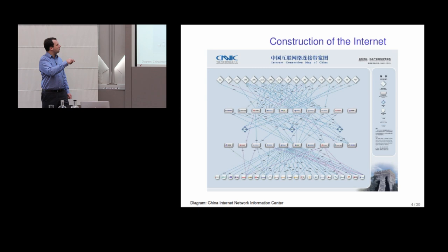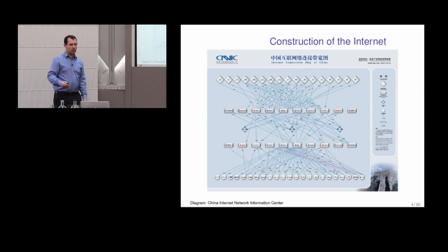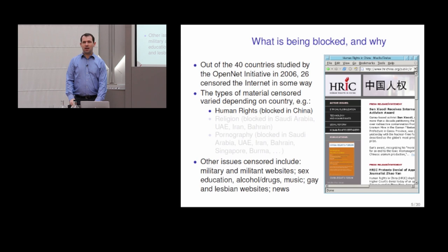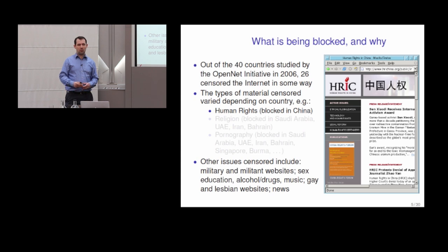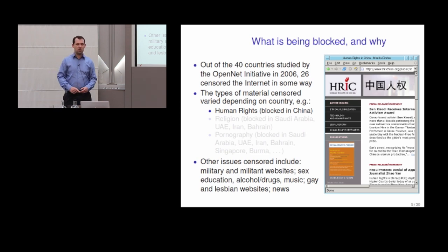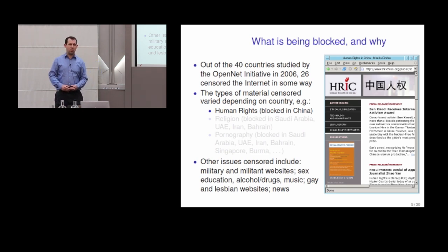These dozen or so ISPs are the only ones with international connectivity. There are 13 CEOs you need to lean on to get what you want, and China has leaned on those CEOs and got what they wanted — they've managed to block quite a lot of content. We wanted to establish exactly what sort of things they were blocking in China. As part of the OpenNet Initiative — a research project I was involved in — we were interested in what other countries were doing. We did a survey in 2006 of 40 countries, and found that a lot of content was being blocked by a lot of countries.